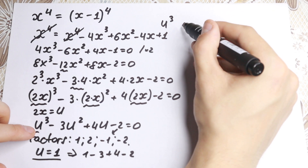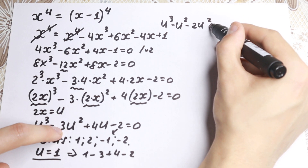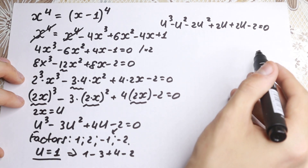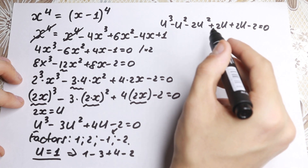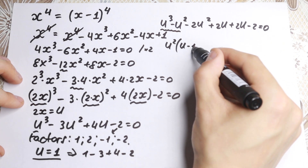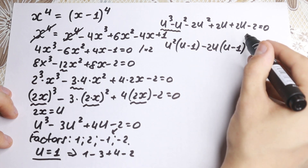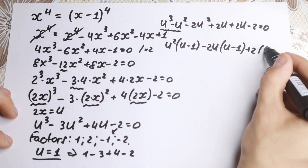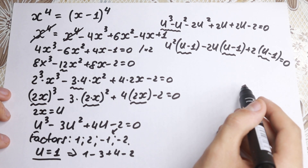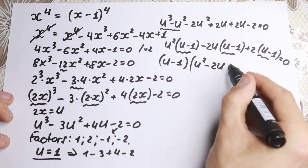To factor out u minus 1, I rewrite the cubic by splitting terms: u cubed minus u squared, then minus 2u squared plus 2u, then 2u minus 2. Factoring each group: u squared times u minus 1, minus 2u times u minus 1, plus 2 times u minus 1. So the cubic factors as u minus 1 times u squared minus 2u plus 2, equal to zero.